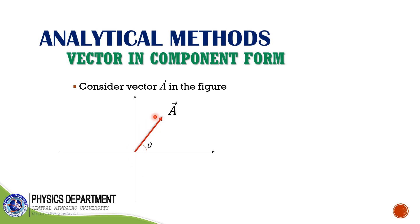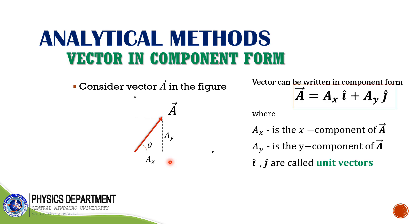Consider vector A which is in the first quadrant and makes an angle theta from the positive x-axis. In two dimensions, there are two components of this vector A: the X component — the shadow of vector A along X — and the Y component — the shadow of vector A along Y — such that vector A can be written in component form as: vector A equals AX i-hat plus AY j-hat, where AX is the X component, AY is the Y component, and i-hat and j-hat are called unit vectors.